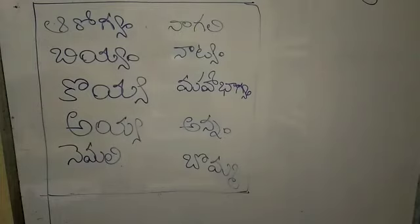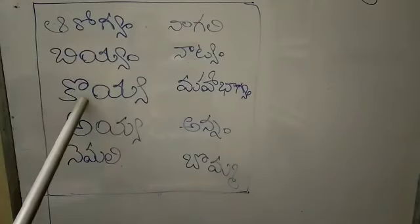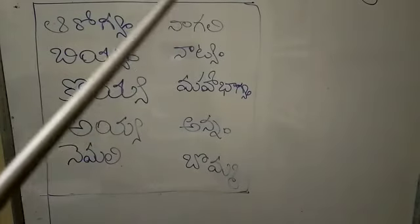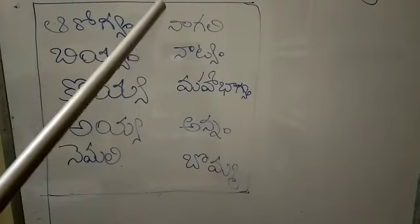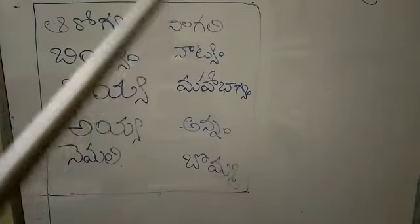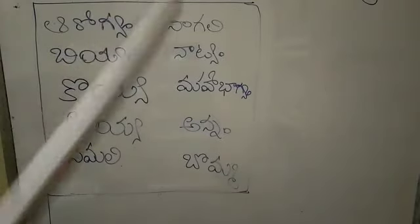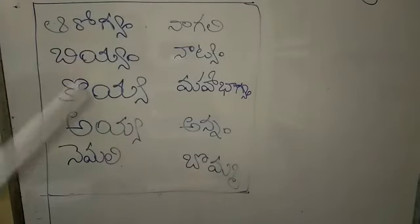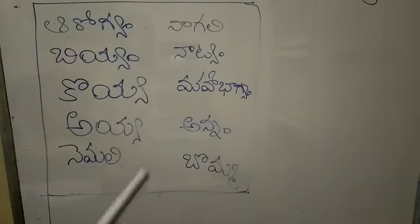Children — Aarogyam means Health, Biyam means Rice, Koya means Wood, Ayya means Father, Nemali means Peacock, Nagali means Plow (Arakka), Natyam means Dance, Mahabhagyam means Very lucky, Annam means Rice, Bumma means Doll. You know now?